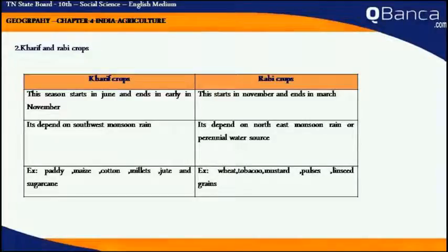Examples of Kharif crops include paddy, maize, cotton, millet, jute, and sugarcane. Examples of Rabi crops include wheat, tobacco, mustard, pulses, and linseed grain.